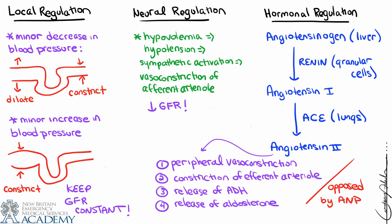Between these three types of regulation — local, neural, and hormonal — we can maintain a very tight control over not only blood volume and blood pressure, but also how GFR is maintained on a day-to-day basis. That concludes the events at Bowman's capsule; from here the filtrate moves into the renal tubule, particularly the proximal convoluted tubule, which will be described next.